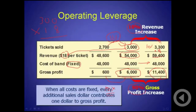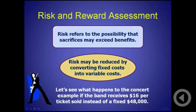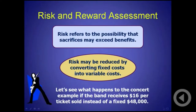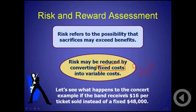Risk and reward assessment: risk refers to the probability that sacrifices may exceed benefits. Risk may be reduced by converting fixed cost into variable cost. If you have a fixed cost, yes, you have leverage, but you also have risk. The more fixed cost you have, the higher your risk. The more variable cost you have, the less risk you carry as a company. Let's see what would happen if the band received $16 per ticket sold instead of a fixed cost of $48,000.